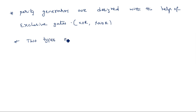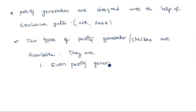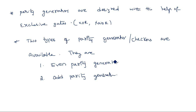Two types of parity generators — or you can also say parity checkers — are available. The first one is even parity generator and the second one is odd parity generator. Even parity generator is the one where the number of ones in the message bit along with the parity bit should be even.